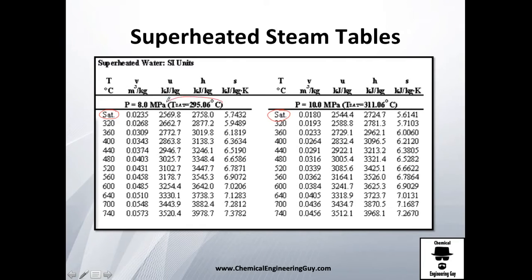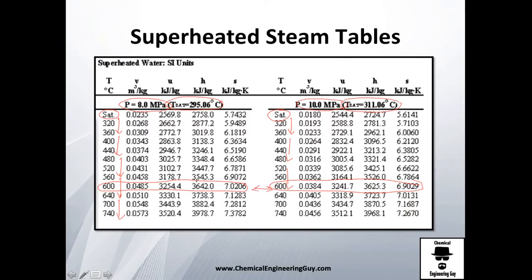For example in the superheated steam table, saturation at 8 MPa is 295°C, and at 10 MPa it's 311°C. If you hold 8 MPa and increase temperature, you get the superheated data at that pressure. At 600°C, the specific volume at 8 MPa is 0.048 m³/kg, while at 10 MPa — which is more pressurized — it is 0.038 m³/kg, a lower specific volume as expected.